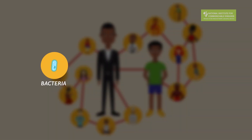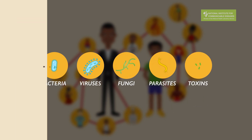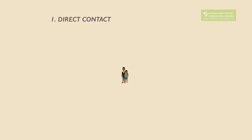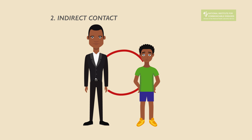They are caused by germs like bacteria, viruses, fungi, parasites or toxins. But how are communicable diseases spread? There are two ways communicable diseases can be spread: through direct contact or indirect contact. Direct contact transmission occurs when there is physical contact between an infected person and a susceptible person. Indirect contact transmission occurs when there is no direct human-to-human contact.